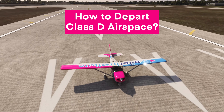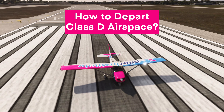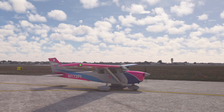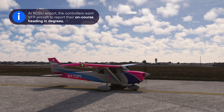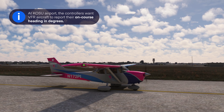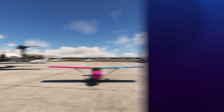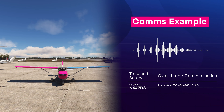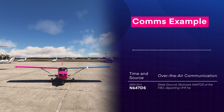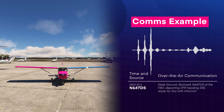Now let's talk about how to depart Class D airspace. First, obtain the ATIS and note any special instructions. For example, at OSU Airport, the controller wants VFR aircraft to report their on-course heading in degrees — some airports are fine with cardinal directions. So when you're ready, contact Ground Control: 'State Ground, Skyhawk November 647 Delta Sierra. At the FBO, departing VFR heading 330. Ready to taxi with information Bravo.'